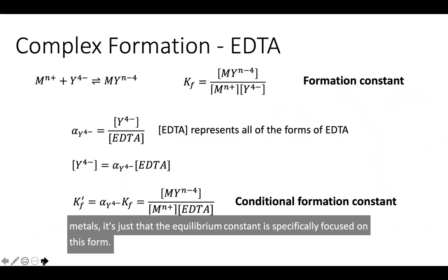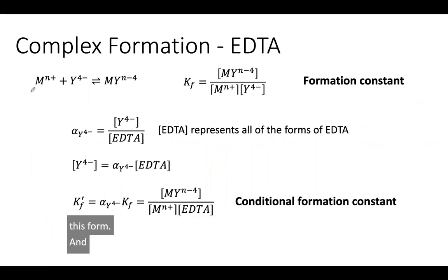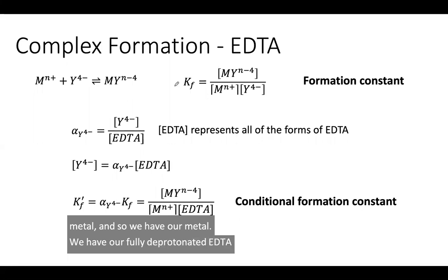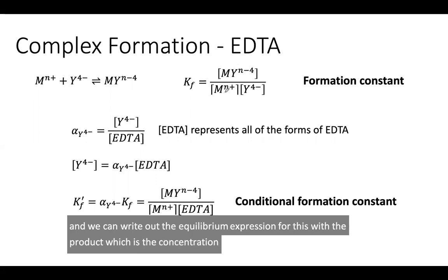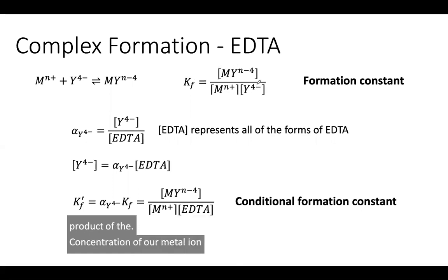We can write out the equilibrium reaction for a generic metal. We have our metal and our fully deprotonated EDTA forming a complex. We can write out the equilibrium expression with the product, the concentration of our complex divided by the product of the concentration of our metal ion times the concentration of our fully deprotonated EDTA.